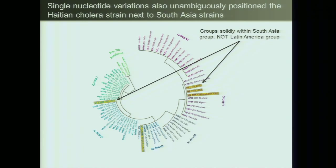What we were able to tell from that rapid information gathering and analysis was where that bug came from. Our data pointed very strongly to it not having emerged from the waters of Haiti — it actually came from afar, most likely from southeast India, Bangladesh, Nepal. That has significant implications for how you might treat that disease. For example, if it's not endemic to the area, you might want to vaccinate aggressively to prevent it from becoming endemic in the region.